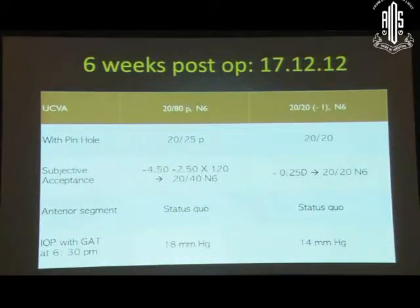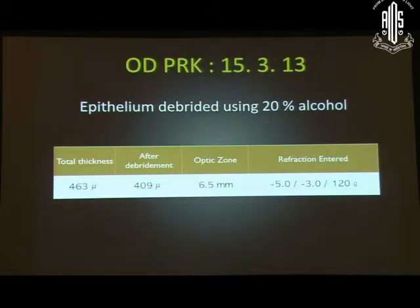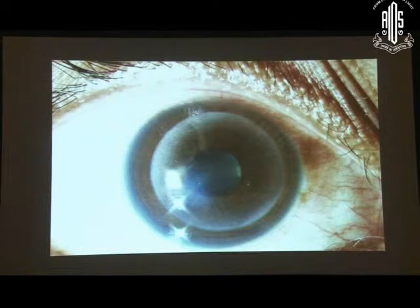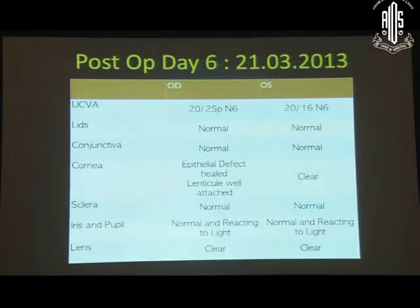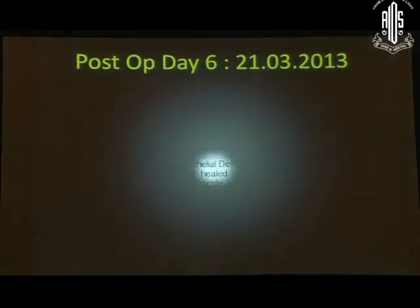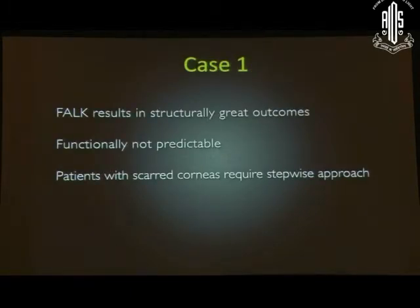After PTK, the flap was repositioned, and at 6 weeks post-op, her visual acuity improved to 20/40 with correction. We waited 3 months and then performed PRK, giving a total of approximately 6 months from the initial surgery. She ultimately achieved an uncorrected visual acuity of 20/25 on post-op day 6 after PRK. This illustrates that FALK alone may not be sufficient — it may need to be followed with additional anterior procedures to correct refractive errors. Though FALK gives good anatomical outcomes, functionally it may not be fully predictable, and astigmatism can be dialed onto the host cornea, often requiring a secondary procedure.